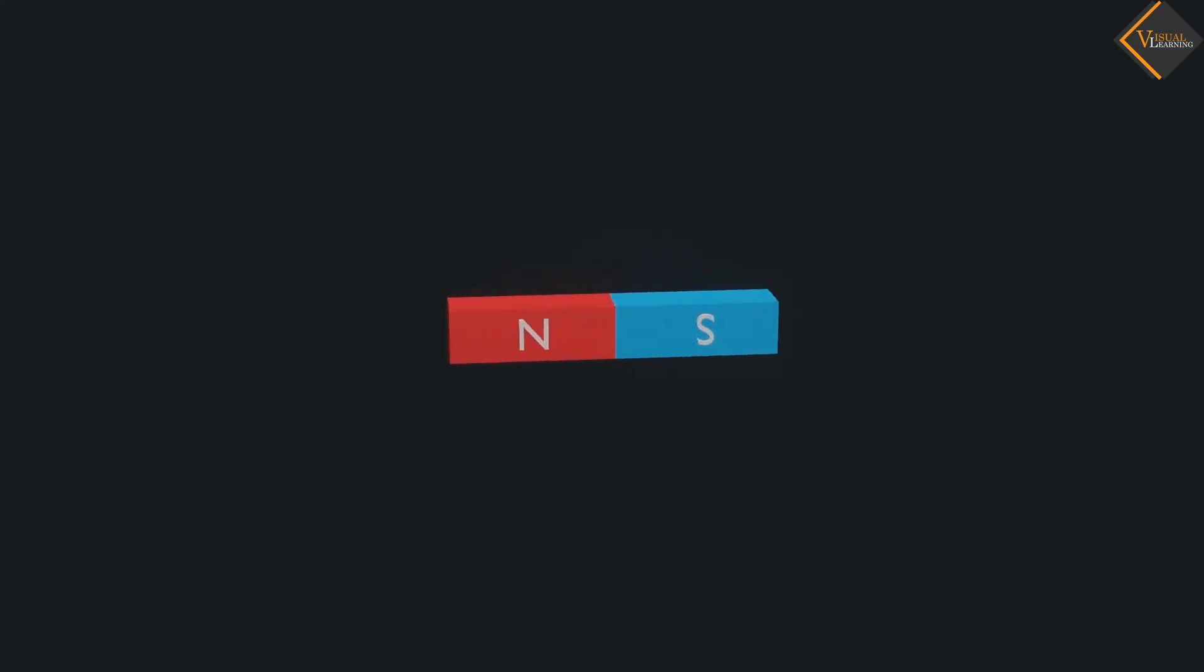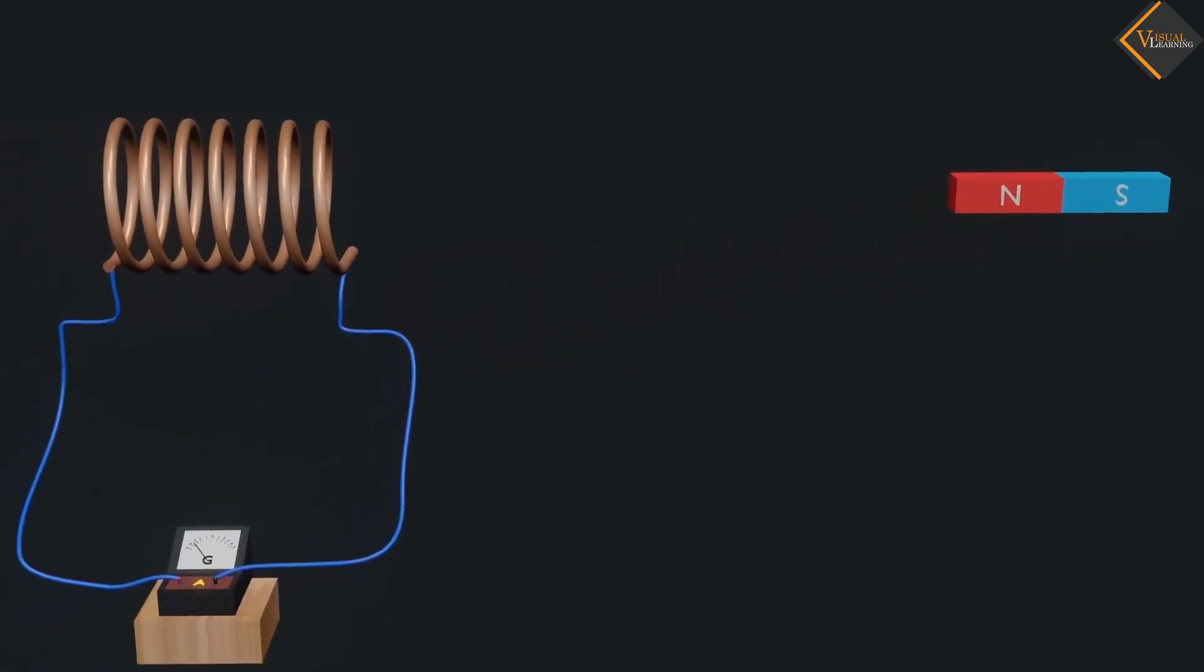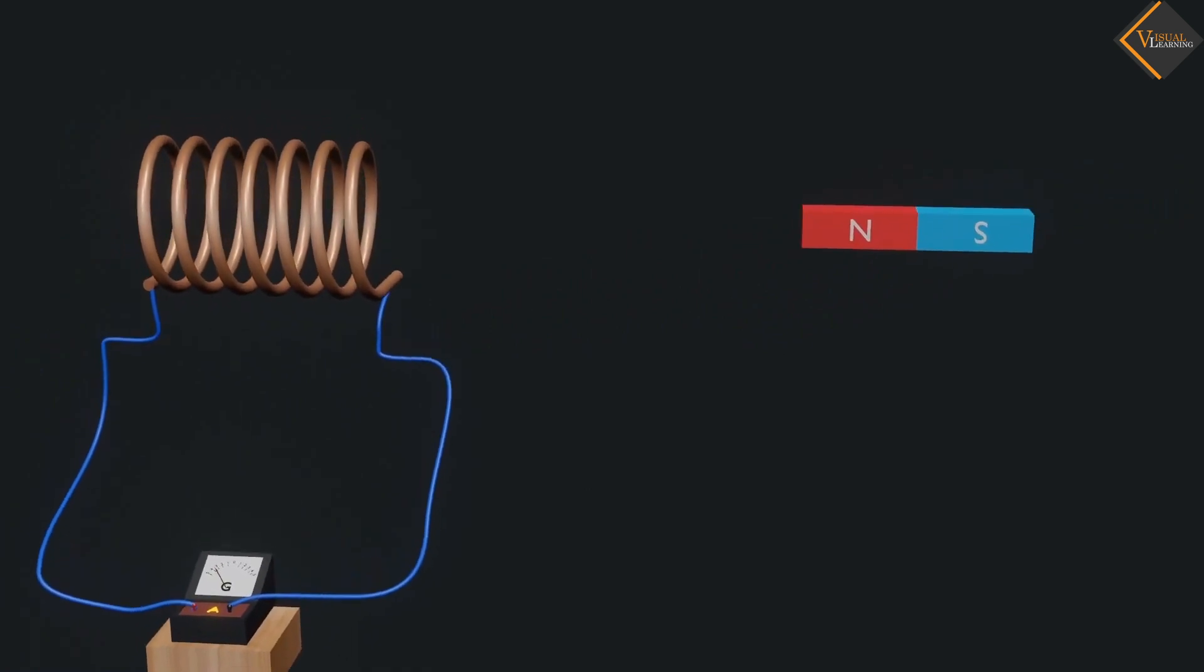Take a strong bar magnet. Place this bar magnet near the coil in such a way that the north pole of the bar magnet facing the coil.